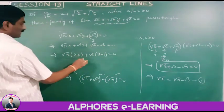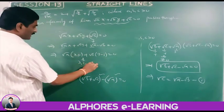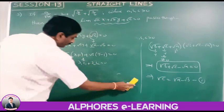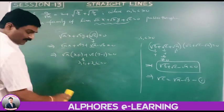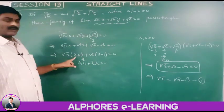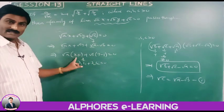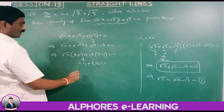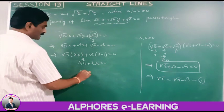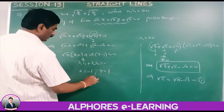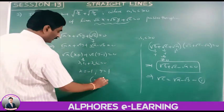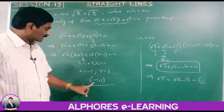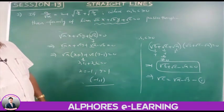This is in the form lambda-1·l1 plus lambda-2·l2 equals 0. The point of intersection of l1=0 and l2=0 gives x plus 1 equals 0, so x equals minus 1; and y minus 1 equals 0, so y equals 1. Therefore the family of lines always passes through the point (minus 1, 1).